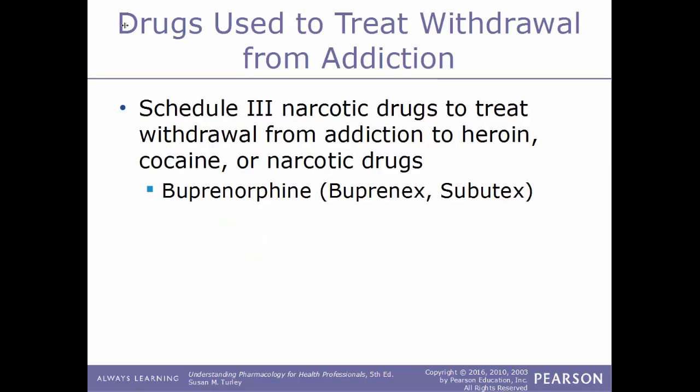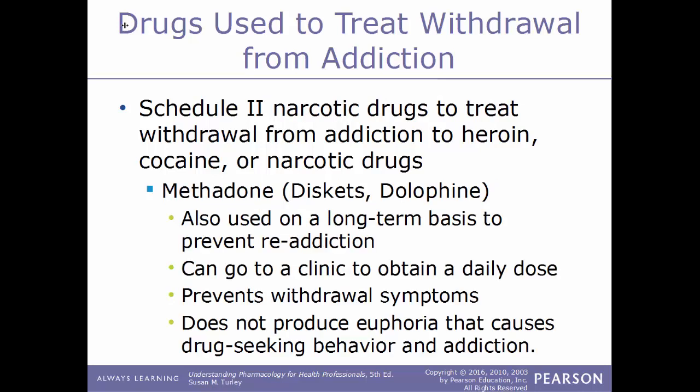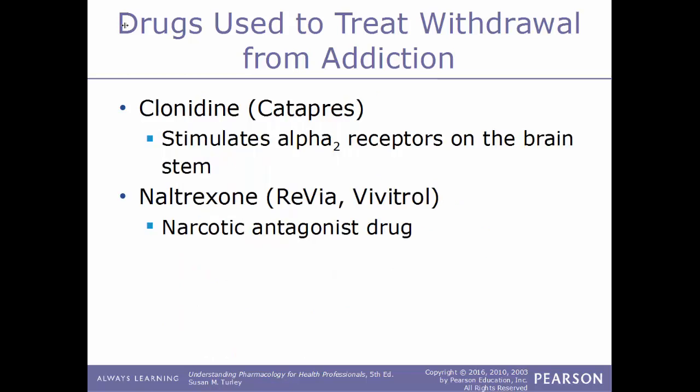A Schedule 3 narcotic drug used to treat withdrawal from heroin, cocaine, or narcotic addiction is buprenorphine (Subutex/Buprenex). Schedule 2 narcotic drugs used to treat withdrawal include methadone (Diskettes/Dolophine), which can also be used long-term to prevent re-addiction — obtained daily from a clinic. Methadone prevents withdrawal symptoms and does not produce the euphoria that causes drug-seeking behavior. Another drug used to treat withdrawal is clonidine (Catapres), which stimulates alpha-2 receptors in the brain.